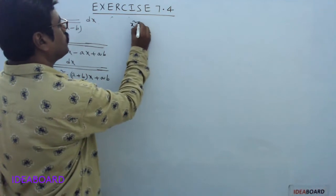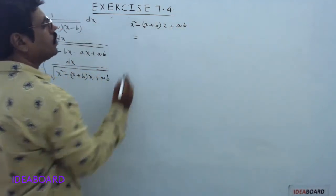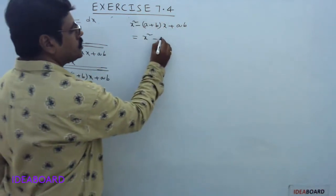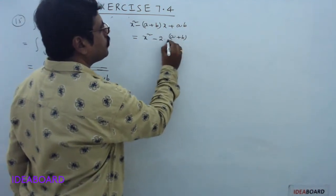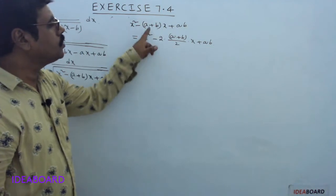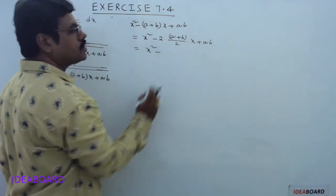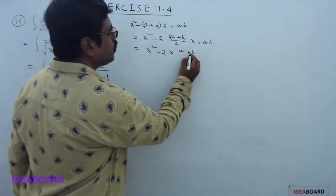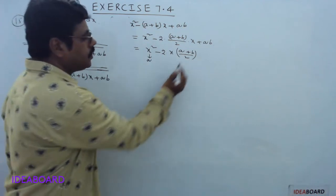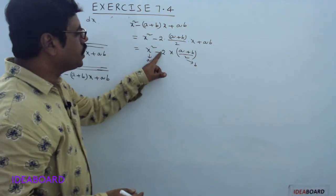Consider the expression: x² minus (a plus b)x plus ab. This equals x² minus 2 times (a plus b)/2 times x plus ab, obtained by multiplying and dividing the second term by 2. If we consider x as 'a' and (a+b)/2 as 'b', this expression is of the form a² minus 2ab.